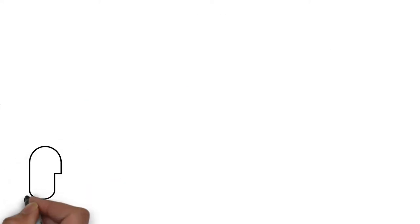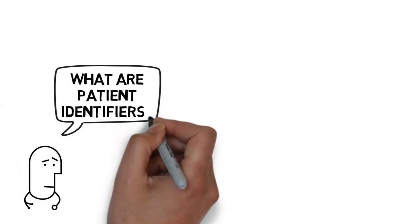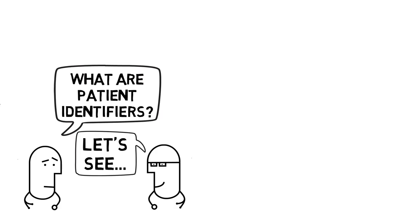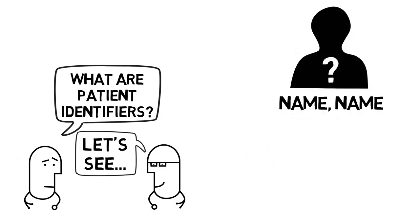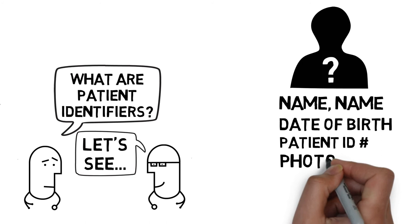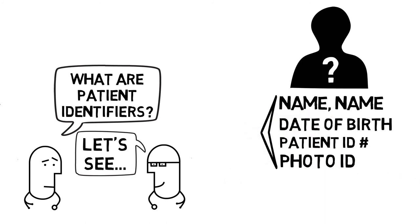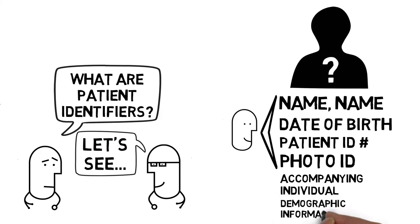Now that we agree that proper patient identification is really important, let's talk about how we properly identify patients. For the conscious patient, the most obvious identifiers are the patient's first and last names as well as their date of birth. Other acceptable identifiers include the patient's ID number and a photo ID. These work well for the patient who is conscious. For the unconscious patient, an accompanying individual such as a family member or police, as well as demographic information from a sending facility, can also be used.